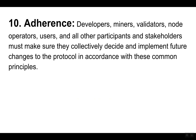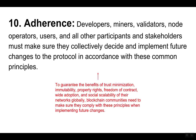Ten, adherence. Developers, miners, validators, node operators, users and all other participants and stakeholders must make sure they collectively decide and implement changes to the protocol in accordance with these common principles. To guarantee the benefits of trust minimization, immutability, property rights, freedom of contract, wide adoption and social scalability of their networks globally, blockchain communities need to make sure they comply with these principles when implementing future changes.